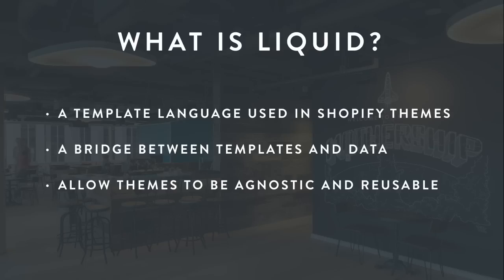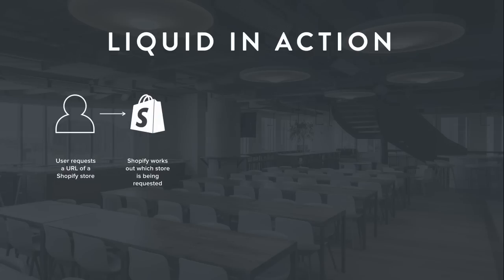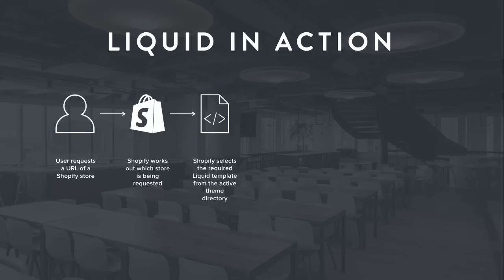This also means that when you come up with a really functional piece of Liquid code you can use it over and over again in all future projects. When someone requests the URL of your Shopify store, the platform works out which store is being requested, then hunts out the active theme directory — you can have multiple themes in a store but only one active one. It will also work out which template file is being requested: a collection page, the home page, or a product page.